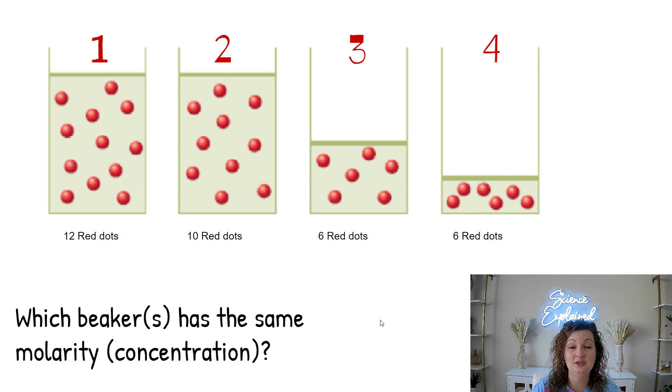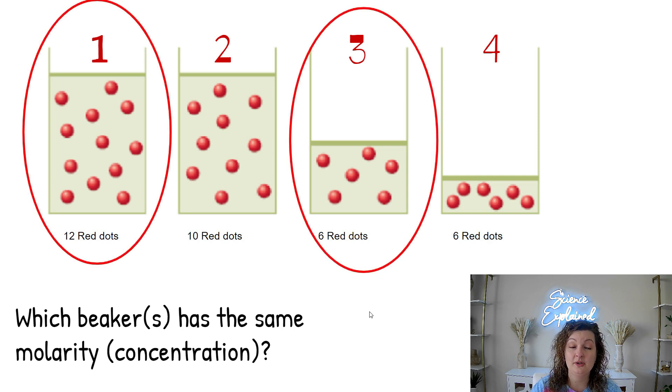Let's go ahead and go over it. So it's going to be one and three. If you notice, this one is all the way to the top, and it has 12 dots. This one, the solvent, is only halfway, and it has half as much solute. So these are equivalent to the same molarity.